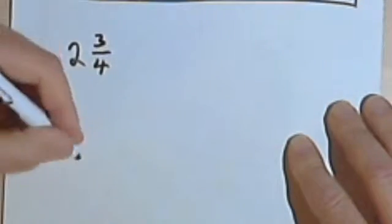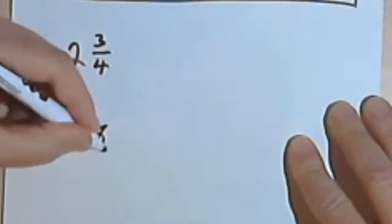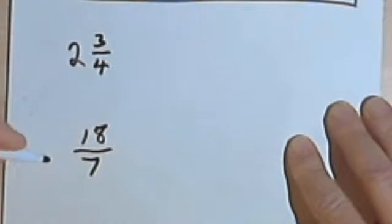On the other hand, if you have a fraction like 18 over 7, if the numerator is bigger than the denominator, then this is considered an improper fraction.